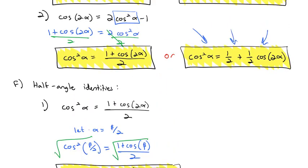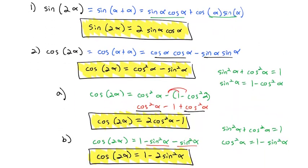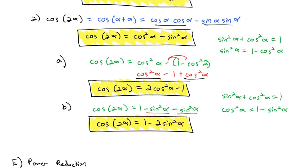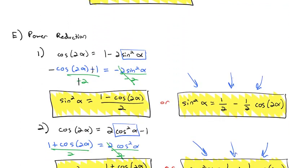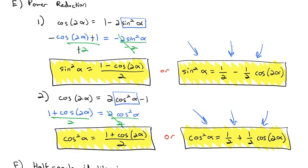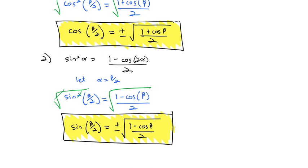So we talked about three sets of identities in this video: the double angle identities for sine and cosine (with three versions of the cosine), the power reduction formulas for taking sine squared or cosine squared and writing them without the square, and the half-angle identities for evaluating an angle divided by 2. In the next video, we'll use these new identities to solve problems, equations, and proofs.